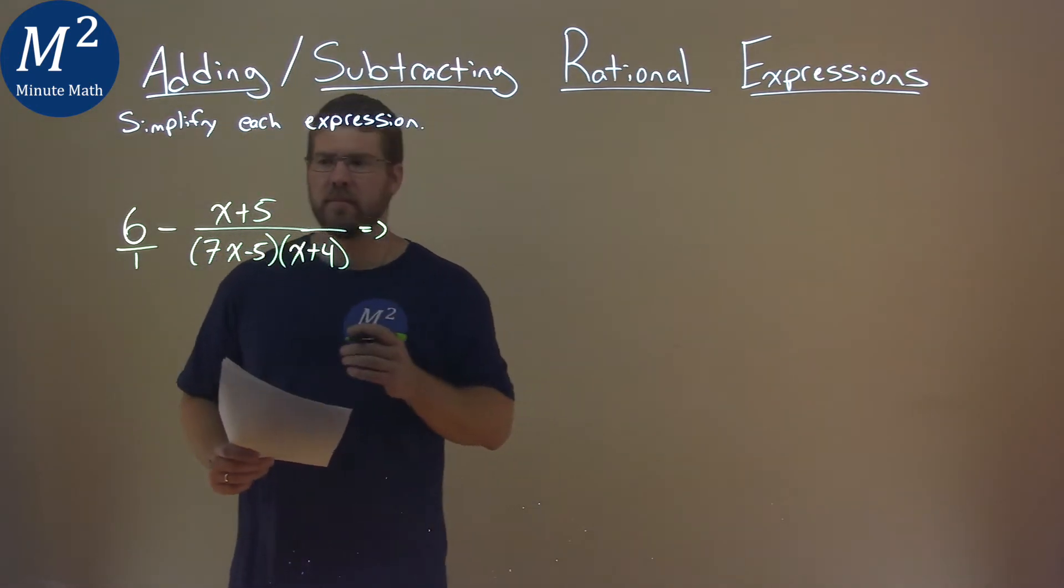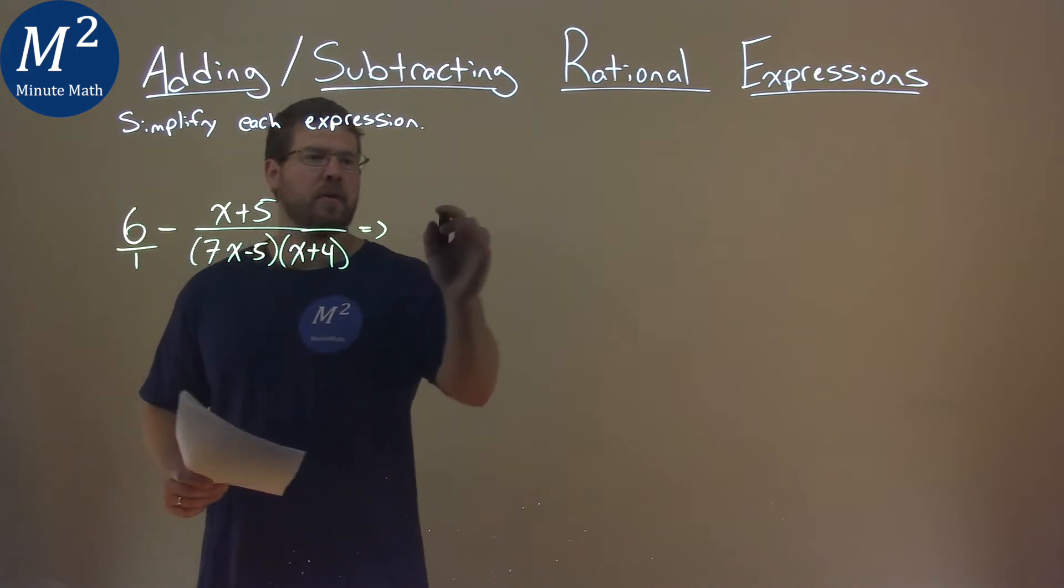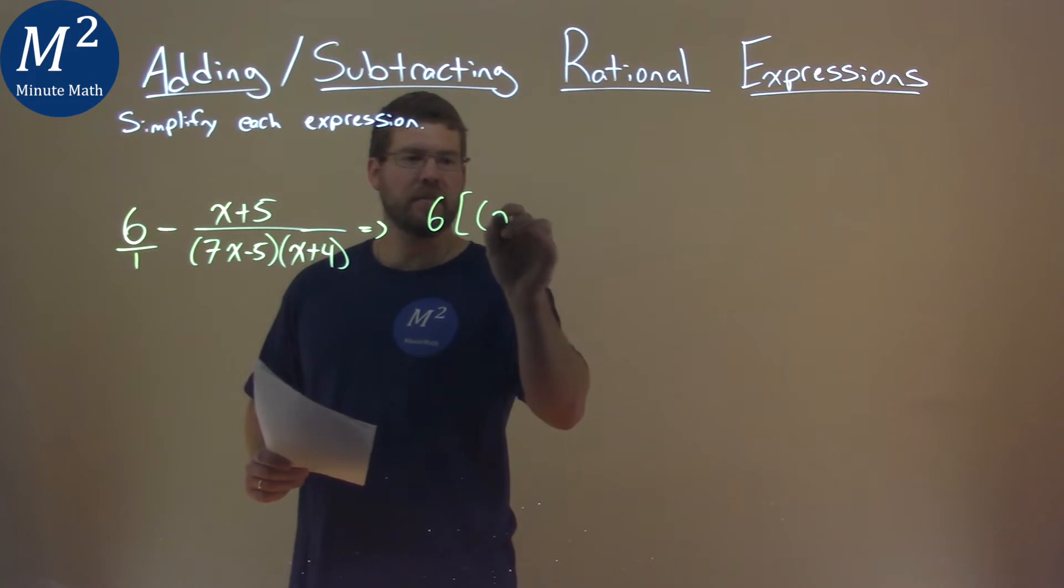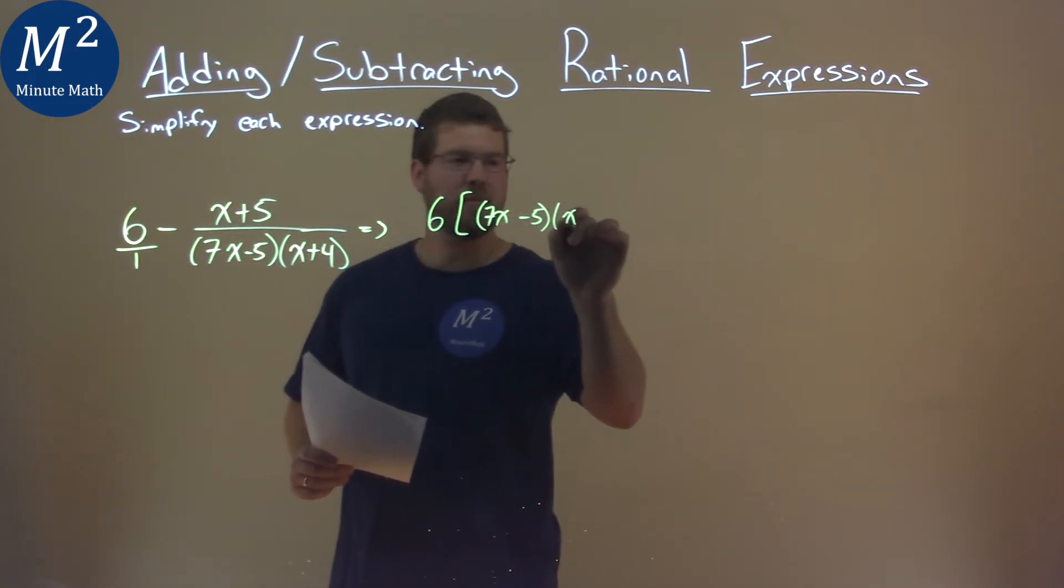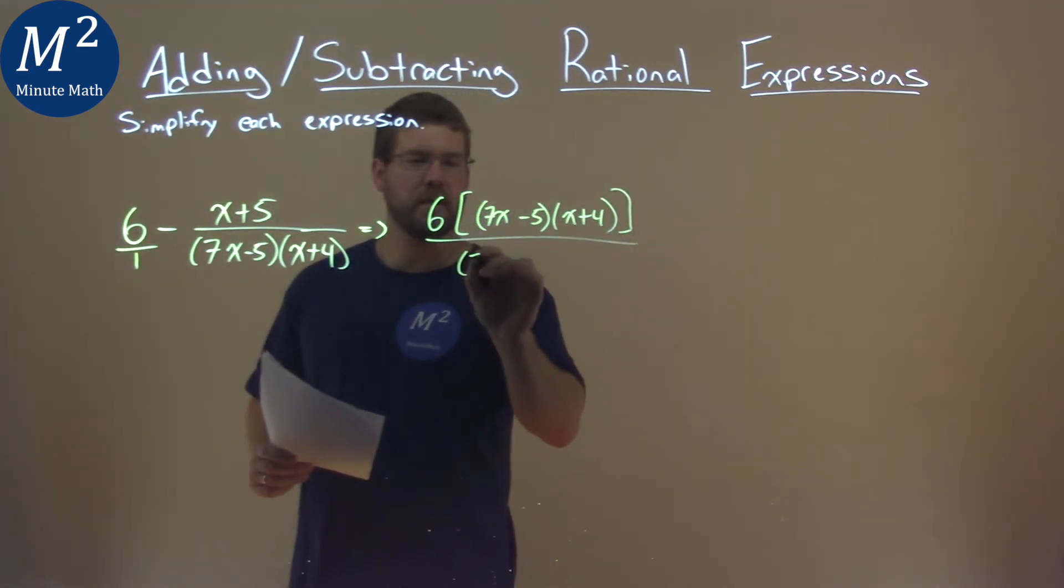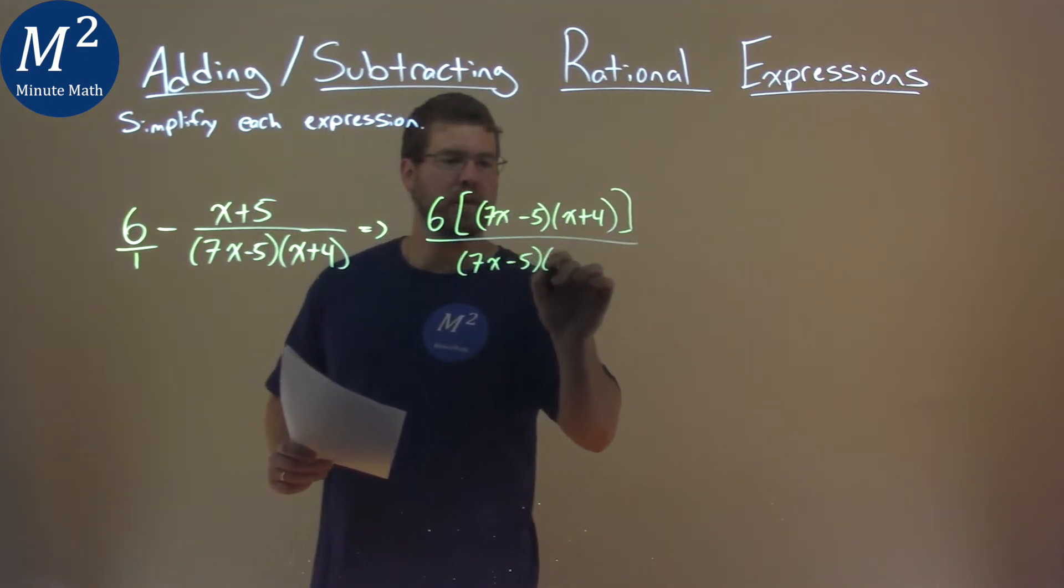So to have the same denominator, I'm going to rewrite this. First part here to be 6 times that 7x minus 5, and we have x plus 4 here, over that same thing, 7x minus 5, x plus 4.